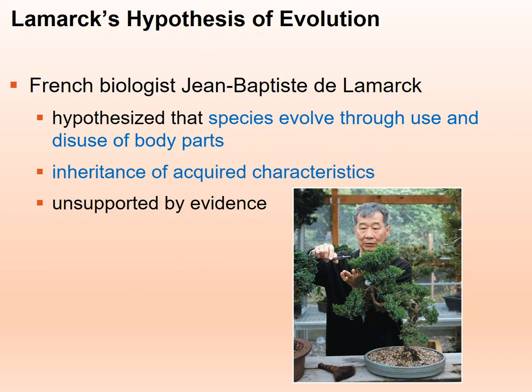Lamarck was another noteworthy scientist. He came up with some interesting thoughts about species and the changes in species, which unfortunately were not supported by much evidence. He hypothesized that species evolved through the use and disuse of body parts — suggesting that if a particular body part, like an arm, wasn't used, eventually it would be lost in that species. This kind of leads into vestigial structures — structures that had a function at one point but over the course of time were lost and no longer have a function, though some remnant of the structure may still remain.